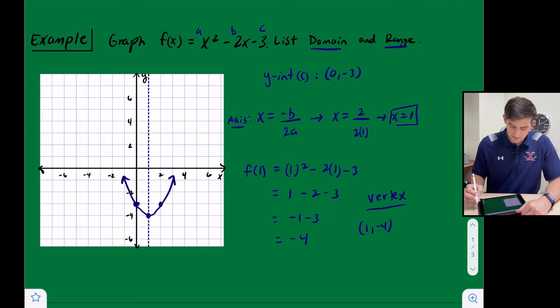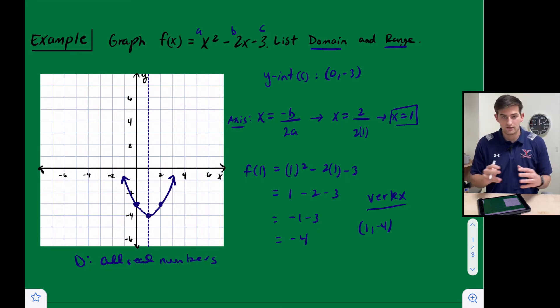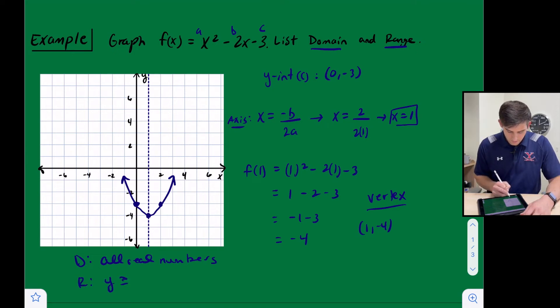And let's go and find the domain and the range. So the domain is going to be all real numbers. Because remember, domain is left to right. And so this graph is going to go left forever and right forever.